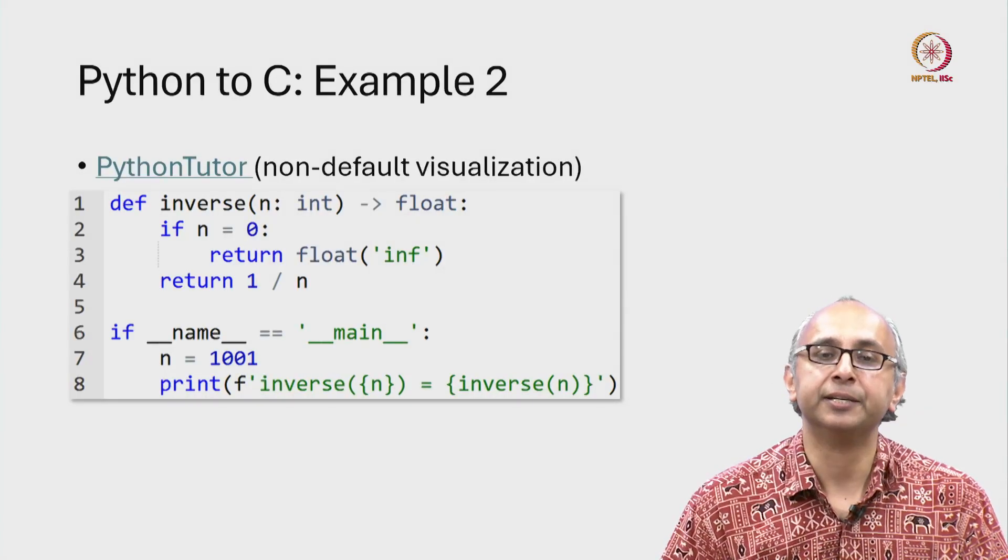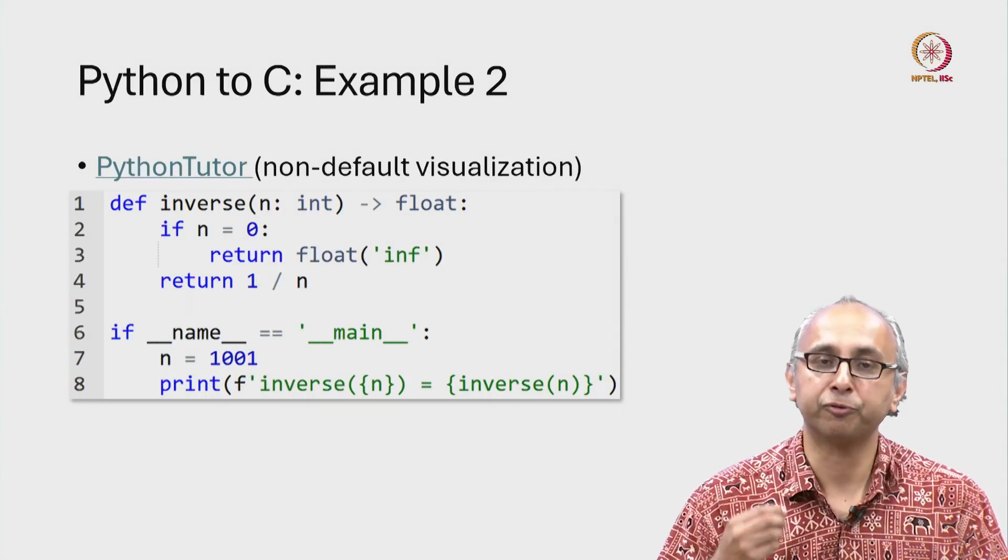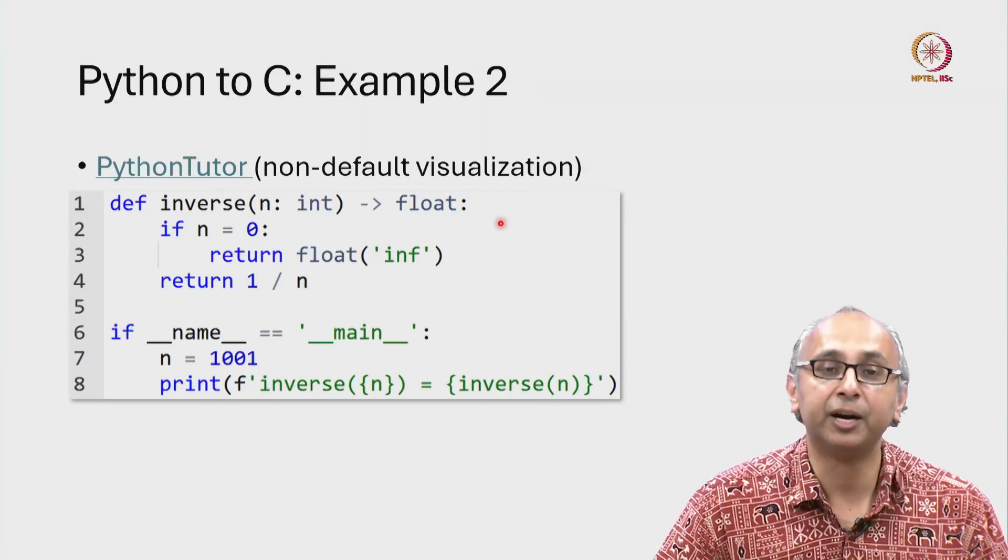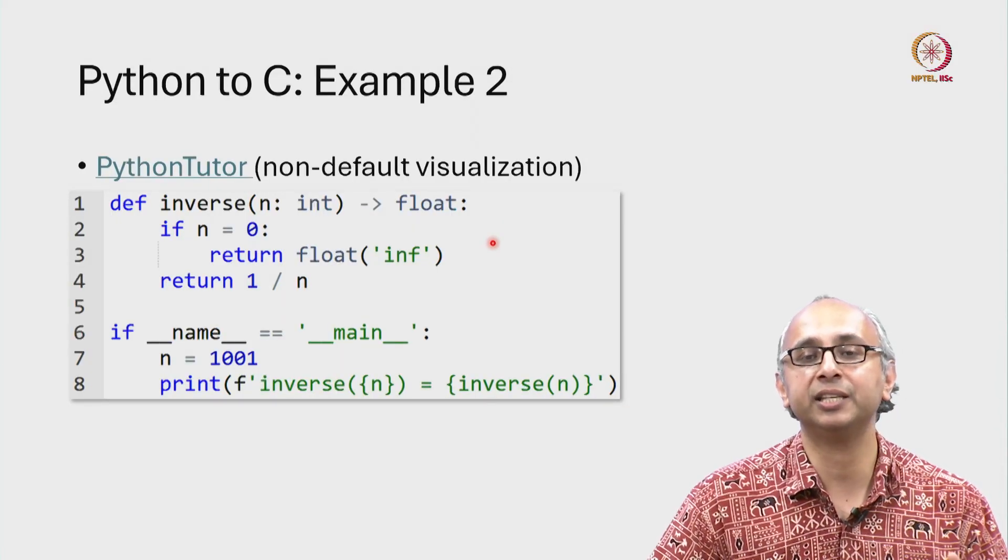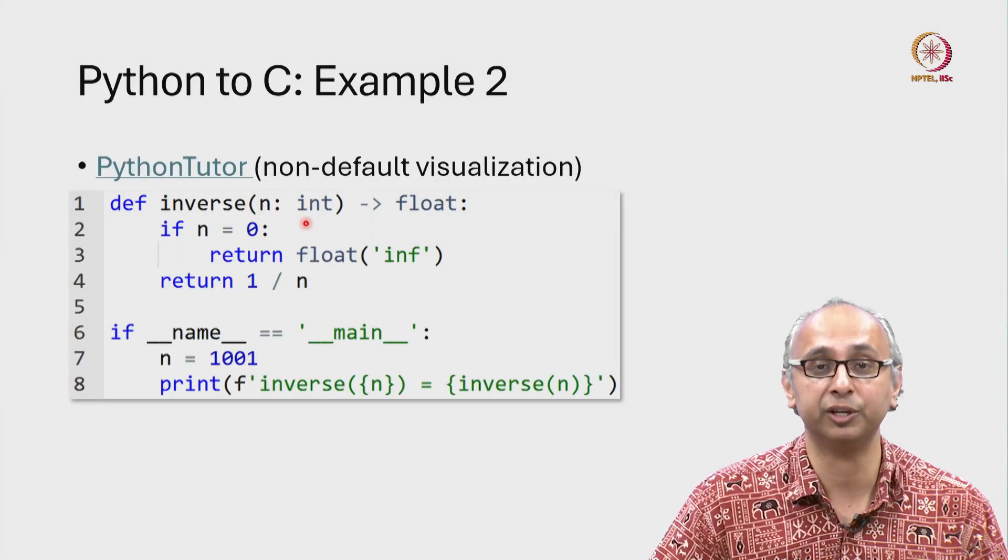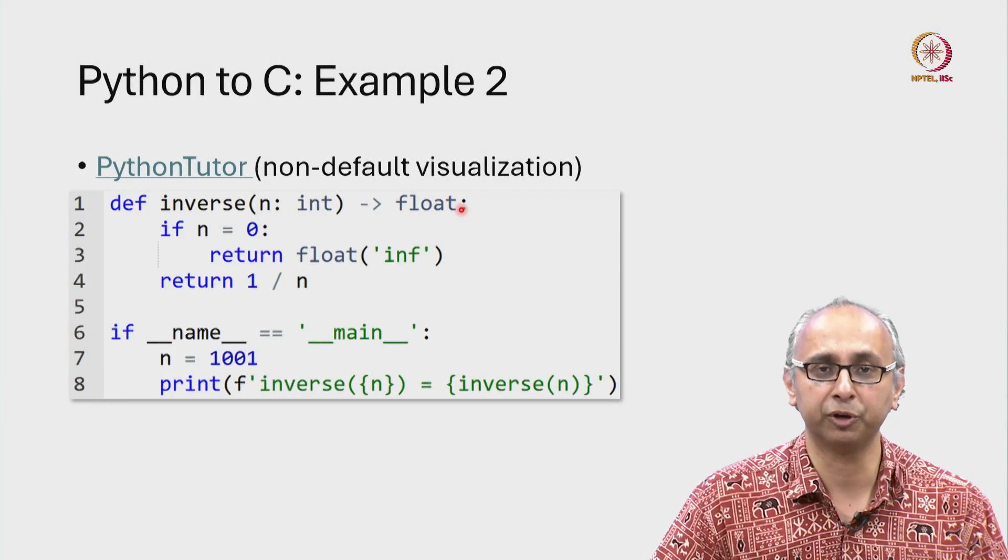Let us now take a look at a second example of converting Python code into C code. Here I have a Python function that calculates the multiplicative inverse of a given integer n, and as you can see it returns a float.